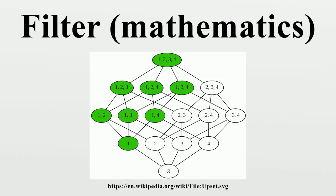Functions on Topological Spaces: Let X and Y be topological spaces, B a filter base on X, and f: X → Y a function. The image of B under f is defined as the set {f(b) : b ∈ B}. The image forms a filter base on Y. f is continuous at x if and only if f(B) → f(x) whenever B → x.